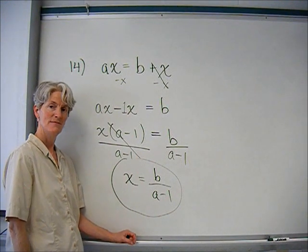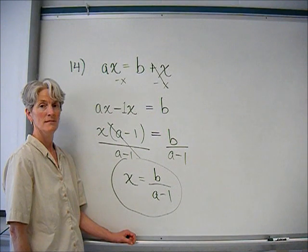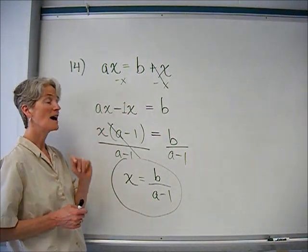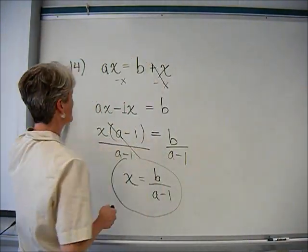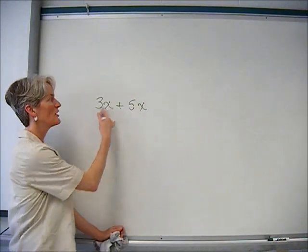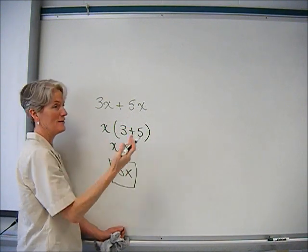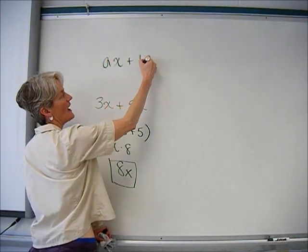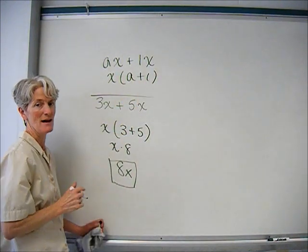Now I can divide both sides by (a minus 1), and I'm done — x is isolated, defined in terms of a's and b's. This is a recurring theme: get all the x's to one side, factor out that x, and divide by what's left. If you cannot combine like terms, factor out the variable you want to isolate. In fact, that's actually how combining like terms works — 3x plus 5x factors out the x, leaving 3 plus 5, which is 8, giving you 8x. It's a great way to understand why you can add like terms.